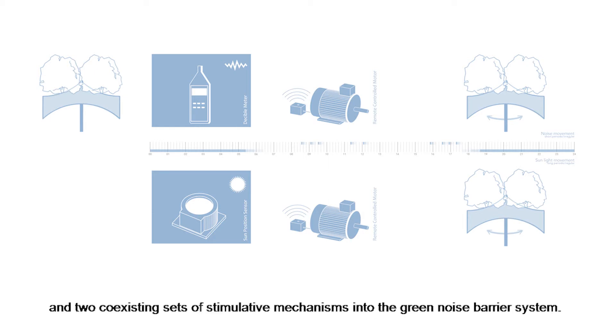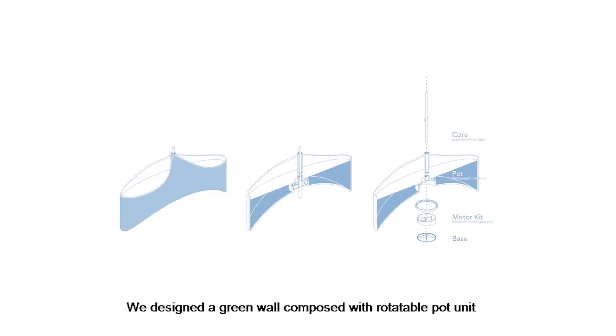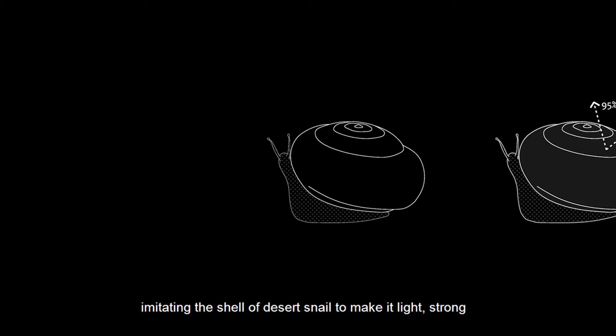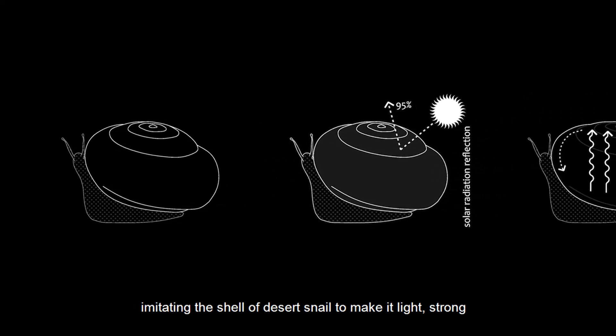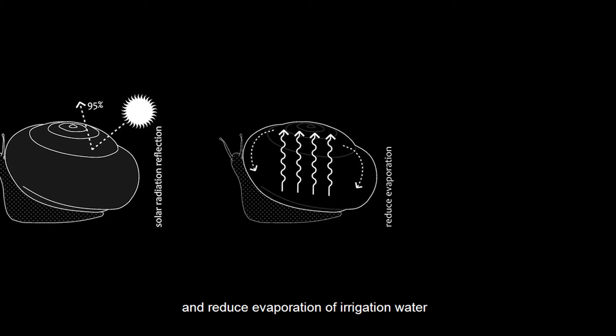We put the receiver, actuator, and deformation system into a coexisting set of stimulative mechanisms into the Green Noise Barrier system. We designed a green wall composed of rotatable pot units imitating the shell of desert snail to make it light, strong, and reduce evaporation of irrigation water.